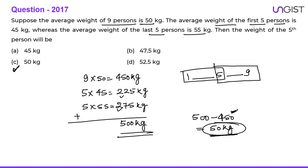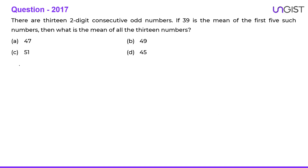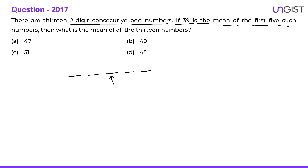The next question: there are 13 two-digit consecutive odd numbers. If 39 is the mean of the first 5 such numbers, what is the mean of all 13 numbers? For 5 consecutive numbers, the average is the third (middle) term. For 13 consecutive terms, the average will be the seventh term — the exactly middle term.